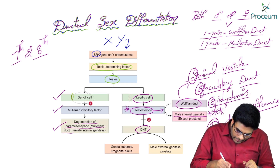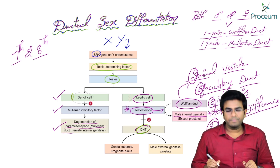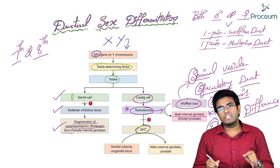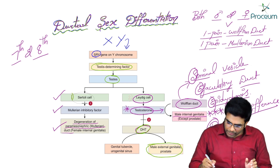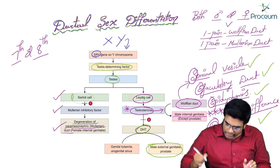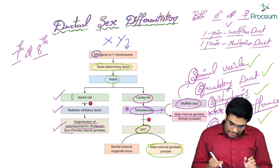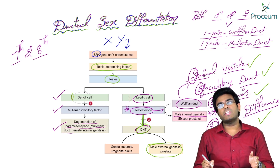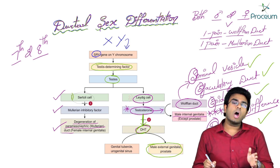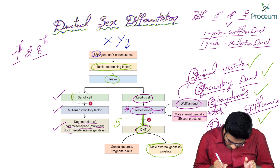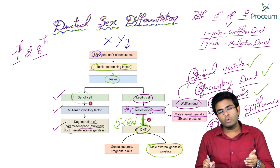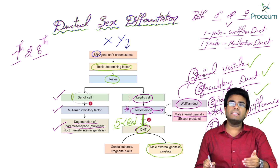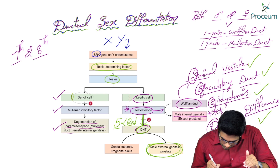Dihydrotestosterone, which is the potent form of testosterone, also helps in the formation of male external genitalia. Testosterone is converted into dihydrotestosterone with the help of the enzyme 5-alpha reductase. This dihydrotestosterone helps in the formation of external genitalia along with the prostate.